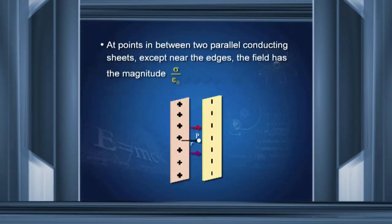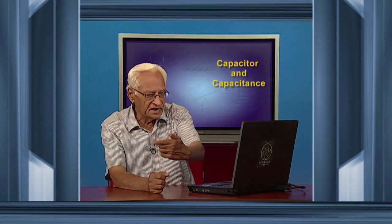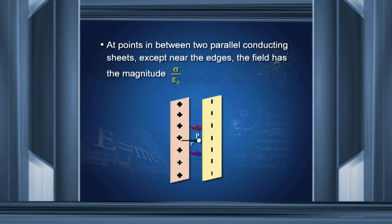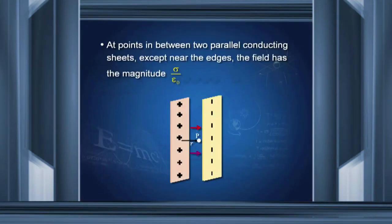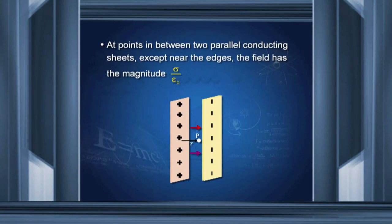Let me remind you how we get it. The field due to the positive sheet is in one direction — say the red arrow — and has magnitude sigma by 2 epsilon-0. The field due to the negative sheet is also in the same direction inside the two sheets — say the blue arrow — and also has magnitude sigma by 2 epsilon-0. Therefore, at any point between the two parallel sheets of opposite charge, the magnitude of the field is sigma by epsilon-0.